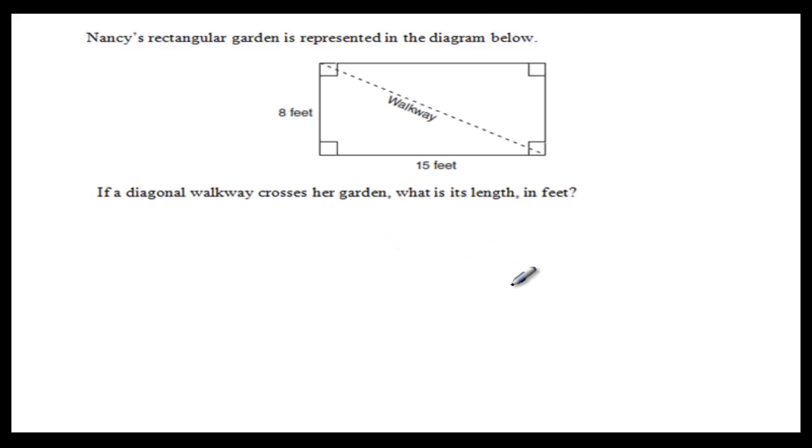Hi, I'll be here helping you with the Pythagorean theorem and Pythagorean ratios. Nancy's rectangular garden is represented in the diagram below. If a diagonal walkway crosses her garden, what is its length in feet?